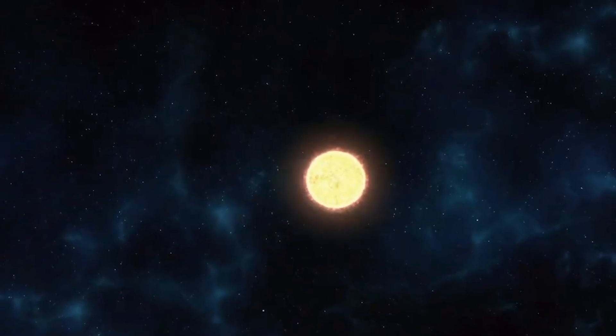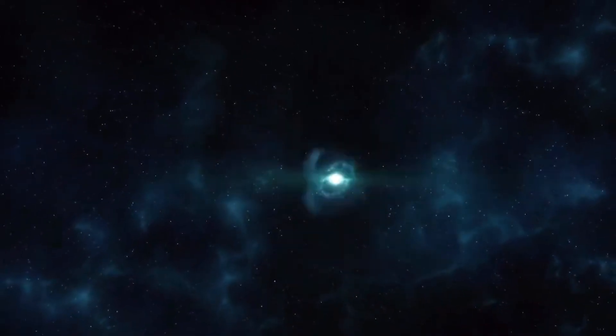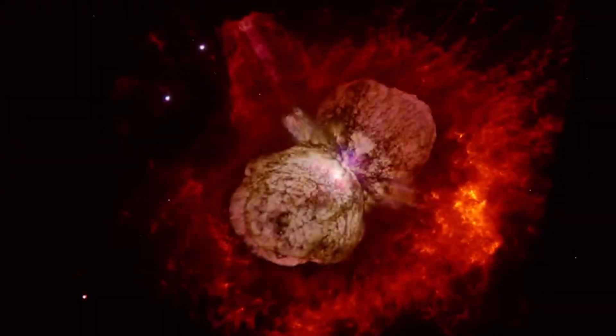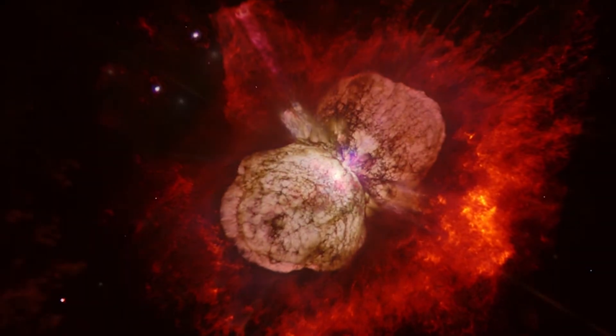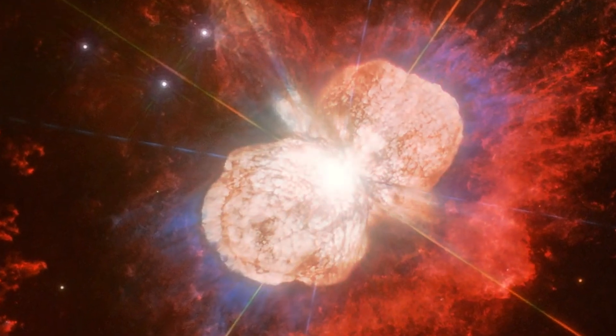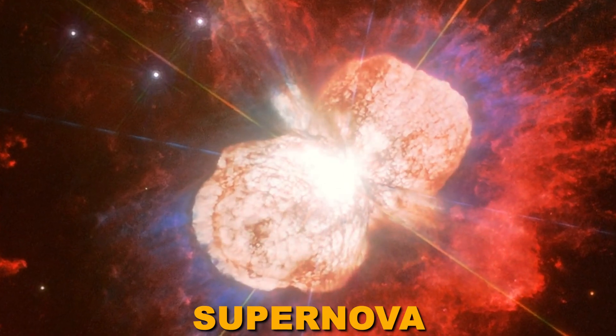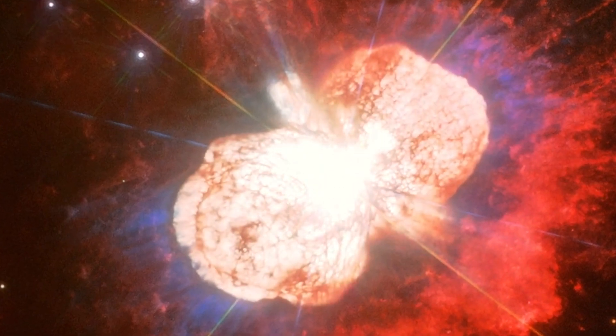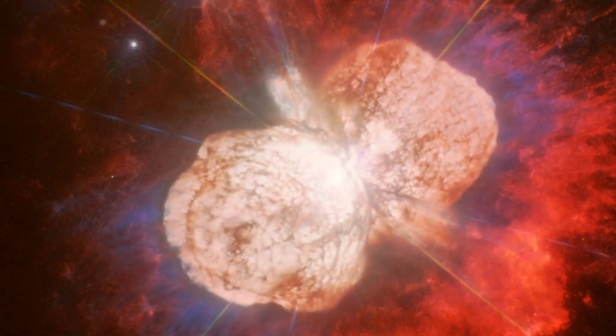A few years later, it reached the highest level of brightness in a big event called the Great Eruption. When it happened, the star could be easily seen in the night sky. It released so much light, as much as is emitted in a supernova explosion. It remained like that for a couple of years, which is not what usually happens with exploding stars.